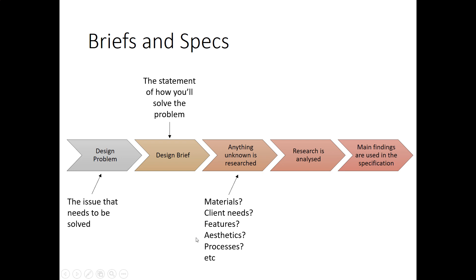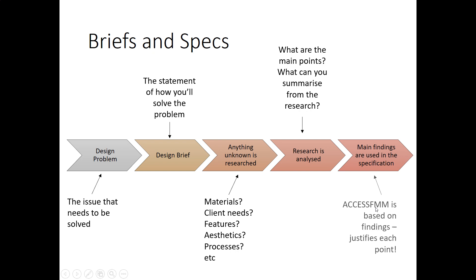Research covers what features are needed, how the client wants it to look, and the best way to manufacture the product. Then we analyse our research — summarising the main points to inform the specification. The main findings are used in the specification using ACCESS FM, and each point is justified using the research as a backup statement. That is the relationship between the design problem, the brief, research, and the spec.